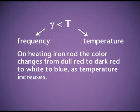It was observed that when a solid substance is heated, radiations are emitted. For example, if we heat an iron piece, radiations are emitted. The color of the radiation changes as the temperature changes. Initially, when the temperature is low, the color of the radiation is dull red. But as the temperature increases, the color changes from dull red to bright red, and then white, and then blue.